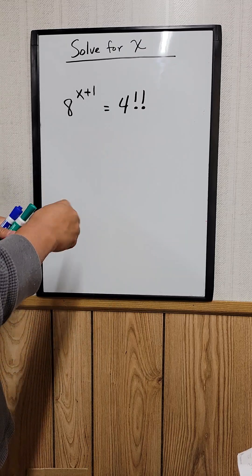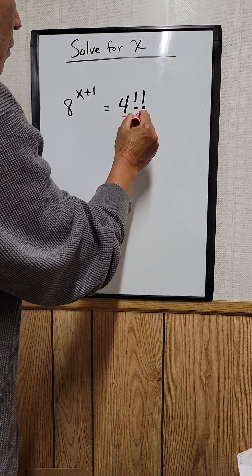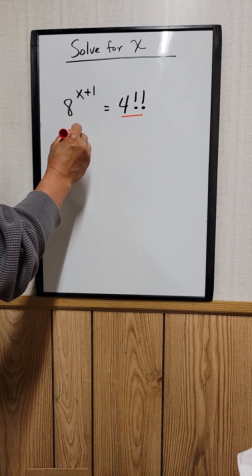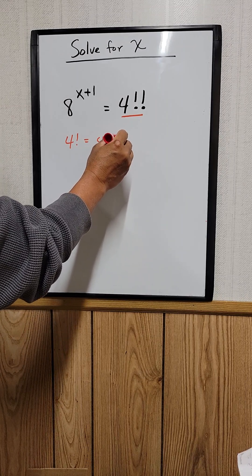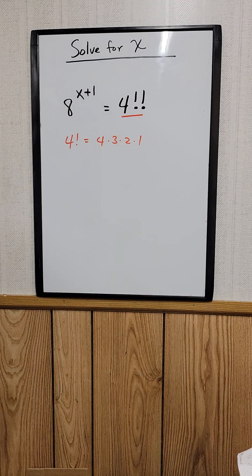The first thing we need to solve is 4 double factorial. What is that equal to? 4 factorial is just 4 times 3 times 2 times 1.